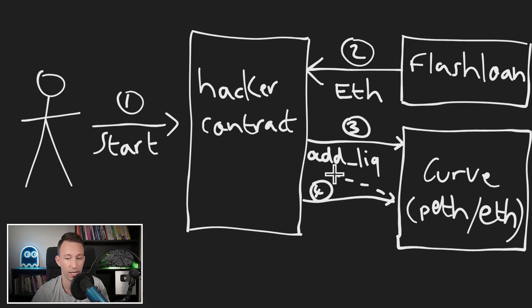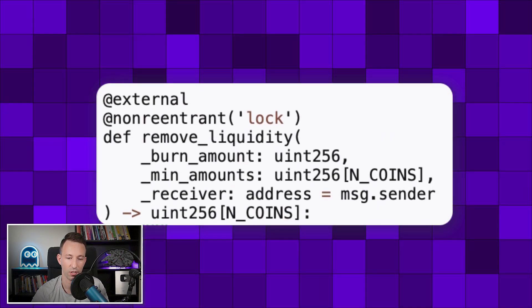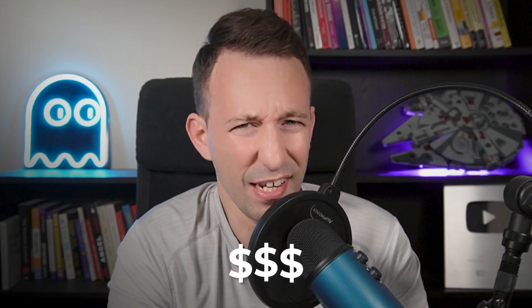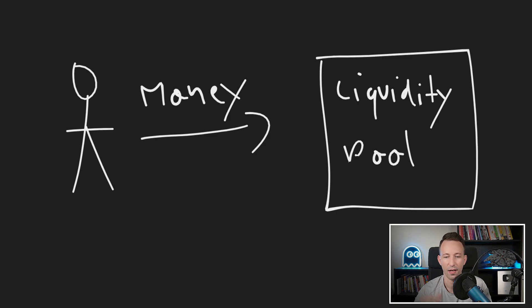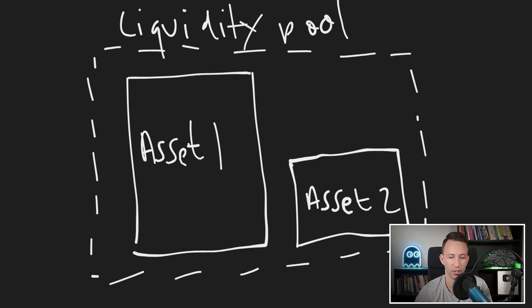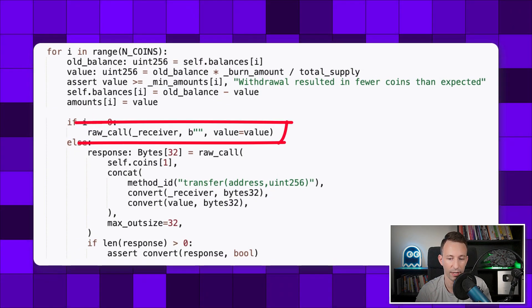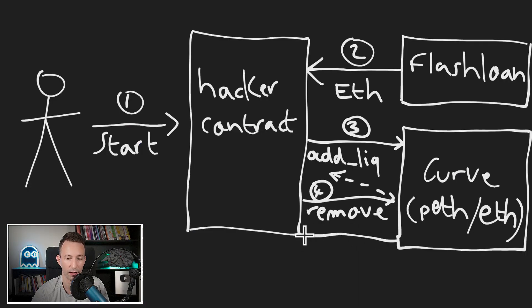After the money was received, a reentrancy attack was triggered on the add liquidity function, and in this call the remaining flash loan money was sent. Once that call to add liquidity completed, execution resumed in remove liquidity. So we had a call to remove liquidity interrupted by a call to add liquidity and then resumed. When the hacker did the reentrancy attack on add liquidity, the smart contract was in an inconsistent state — remove liquidity had started but not finished — so the attacker was given too many LP tokens. This meant that when remove liquidity completed, they got back more liquidity than they were supposed to.